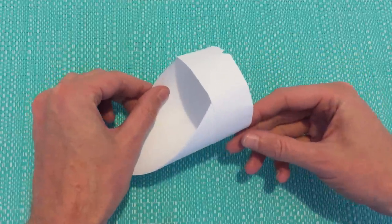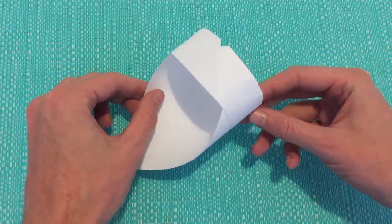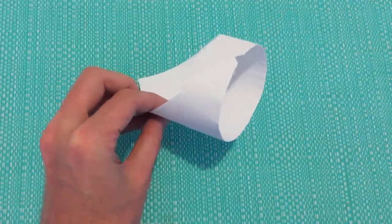It will drop for about 1 to 1.5 meters, then catch the air and sail along. That's how you make the paper circle plane.